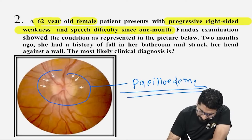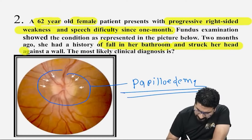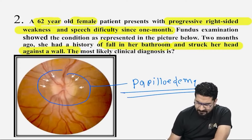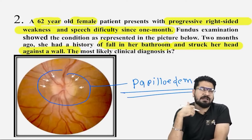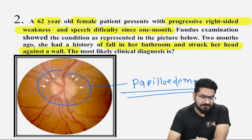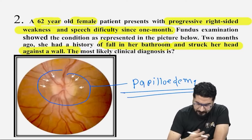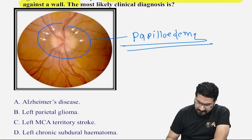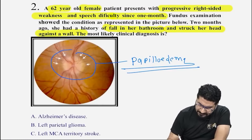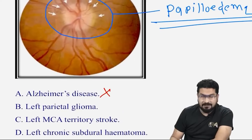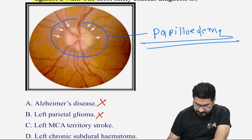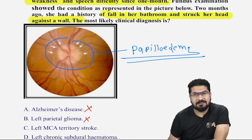Two months ago she had a history of fall in her bathroom and struck her head against a wall — so history of fall is the second hint. The most likely diagnosis: papilledema can occur due to raised intracranial pressure. Alzheimer's disease presents with memory impairment — not the answer. Left parietal glioma produces parietal lobe syndrome — not the answer. Left MCA stroke unlikely to produce papilledema.